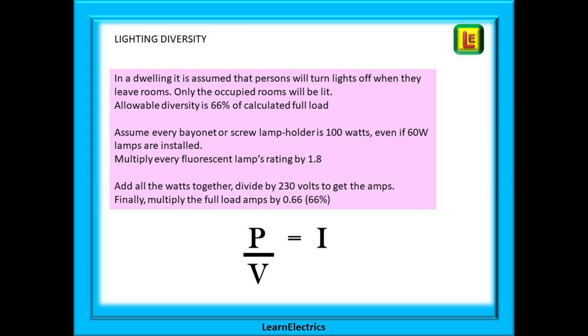Next is lighting, and there may be two or three lighting circuits in the house. Calculate diversity for each lighting circuit separately. In a dwelling, it is assumed that persons will turn lights off when they leave rooms. Only the occupied rooms will be lit, and we have an allowable diversity of 66% of the calculated full load current. We calculate full load by assuming that every bayonet or screw lamp holder is 100 watts, even if 60 watt lamps are installed. Add up the number of lighting points on the circuit, and for every fluorescent lamp, we multiply the actual lamp rating by 1.8.